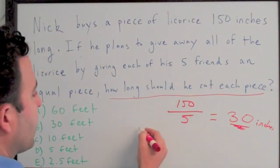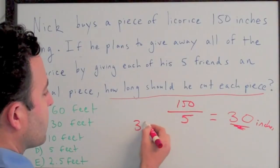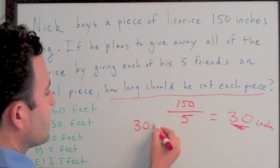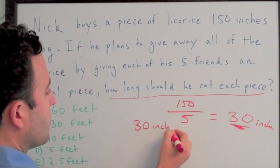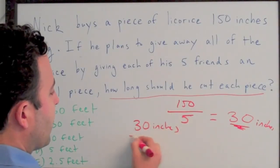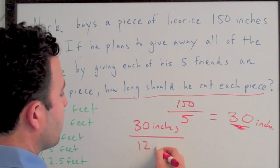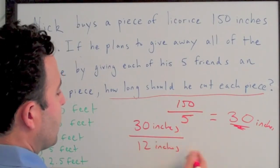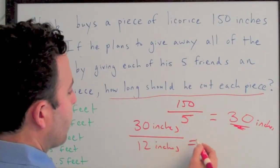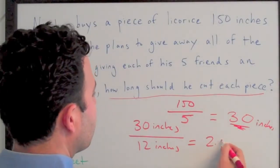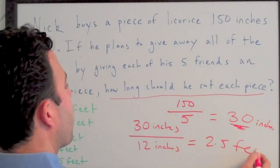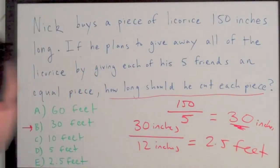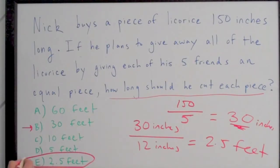Don't forget to do your units of measurement. 30 inches — we're going to divide it by 12 inches, and that's going to give us how many feet 30 inches is: 2.5 feet. The answer is E, 2.5 feet.